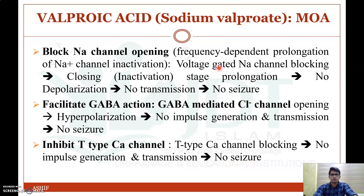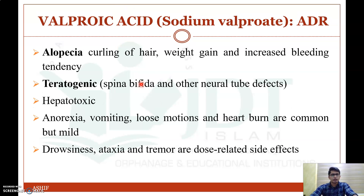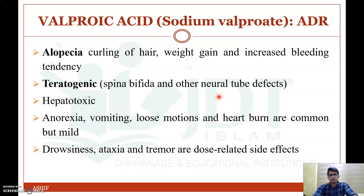That is the mechanism of action of valproic acid. Coming to the adverse drug reactions, it may produce alopecia or curling of hair, weight gain, increased bleeding tendency, and it is also teratogenic — it will cause fetal abnormality if administered to a pregnant woman, producing spina bifida as well as other neural tube defects. It will also cause hepatotoxicity, so it may cause liver damage with prolonged use.